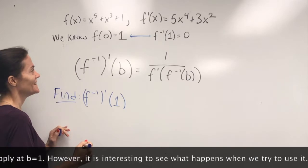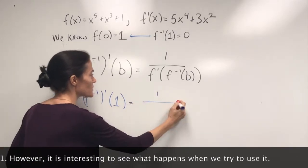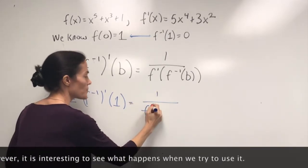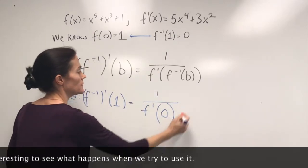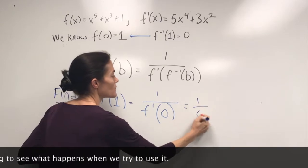So this would say it's 1 over f prime of f inverse of 1, we would get 1 over 0.